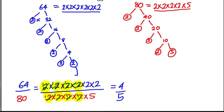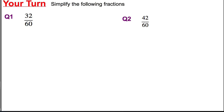Now have a go at simplifying two more fractions on your own. You'll need to write 32, 42, and 60 as a product of primes first using factor trees to see if you can simplify them. Thank you for watching.